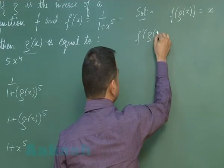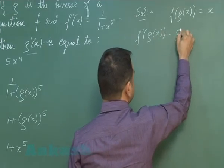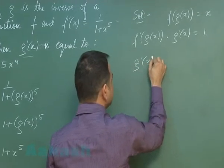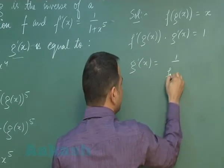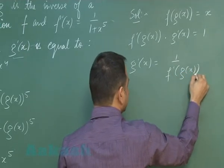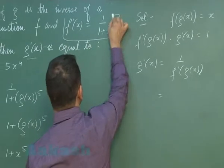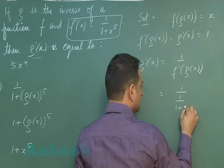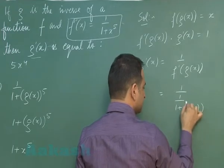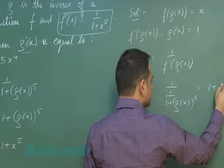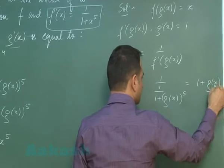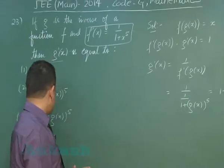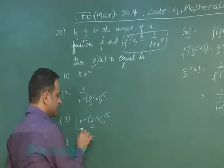Differentiating both sides of f(g(x)) = x, we get g'(x) = 1 upon f'(g(x)). Using the given expression for f'(x), this equals 1 plus g(x) raised to the power 5. So the required solution is option number three.